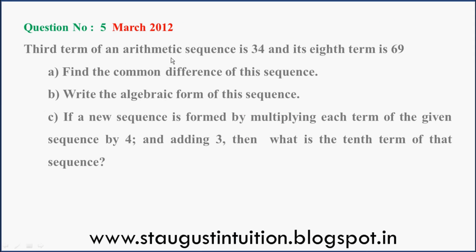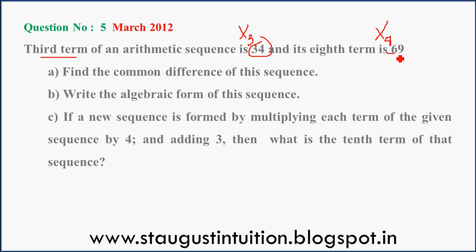The 3rd term of an arithmetic sequence is 34, and its 8th term is 69. Find the common difference of this sequence.